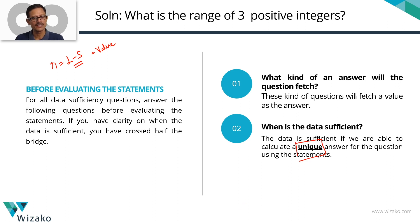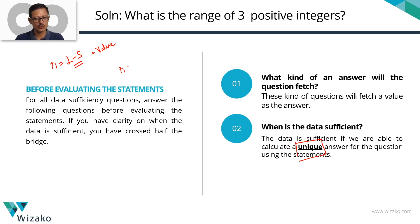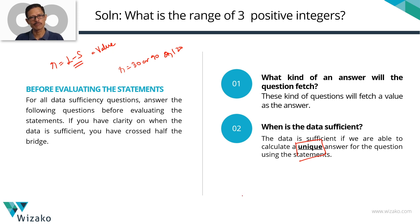When is the data not sufficient? When the answer we get is not unique. Not unique has two components: if with the information we are not able to find even a single value, the data is not sufficient. Also, if we get more than one value — say the range could be 30, 90, or 120 — there are multiple possible cases, so the data is still not sufficient. A unique answer is what we are striving for.